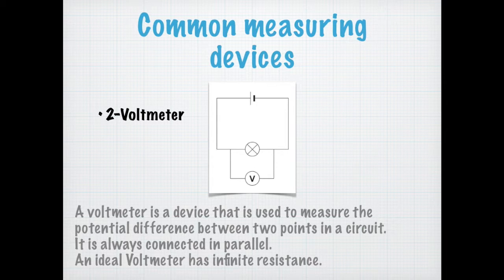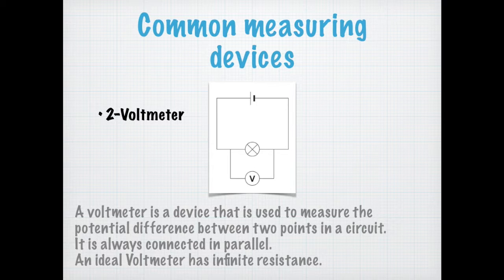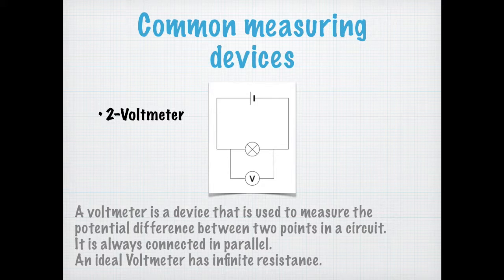It is going to be easier for the voltmeter to measure potential difference in parallel. And at the same time, if you put it in series, it's just not going to measure potential difference across two ends of a conductor because it's not connected to both ends of a conductor. Now, an ideal voltmeter has infinite resistance. We know that the potential difference across all branches of a parallel combination remains the same, but the potential difference splits in series. If the resistance of the overall circuit changes just because of the voltmeter, then the splitting of the potential difference is also going to change.